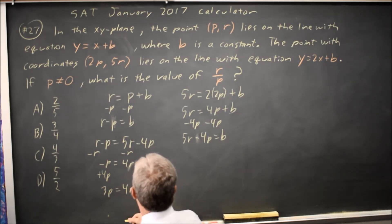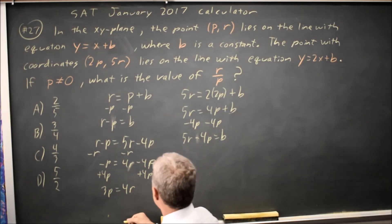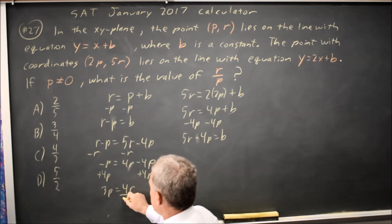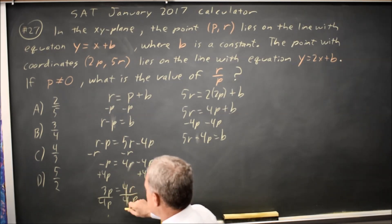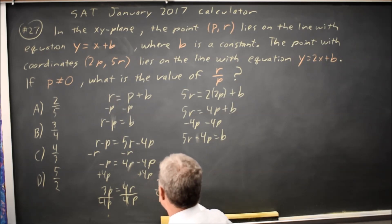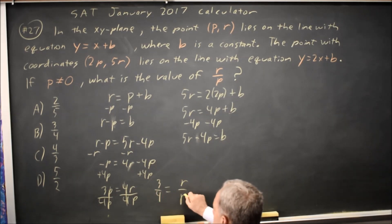I want to get r over p, so let's divide both sides by p, because that gives me r over p, and then divide by 4 also to get the r over p by itself. 4 over 4 is 1, p over p is 1, and we have 3 over 4 equals r over p.